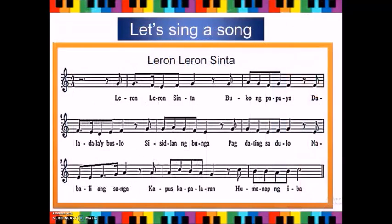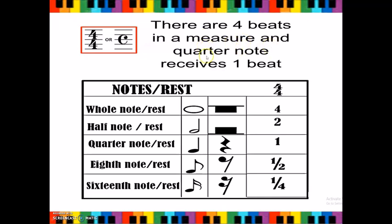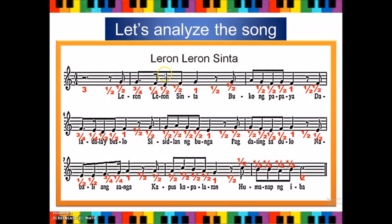Now let's sing a song — 'Leron Leron Sinta.' Now let's analyze the song. What is the title? Correct, it is 'Leron Leron Sinta.' What is the time signature? Yes, it is 4/4 — four beats in a measure and the quarter note or rest receives one beat. We are going to follow this chart to analyze the song.